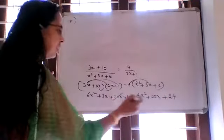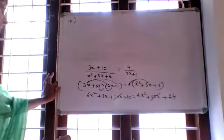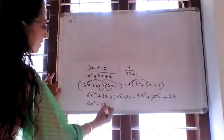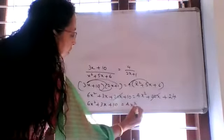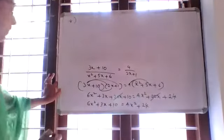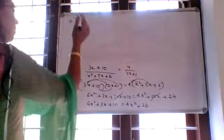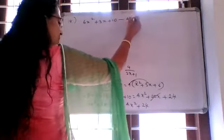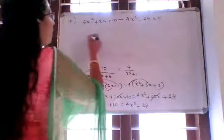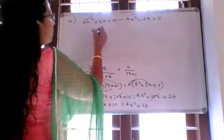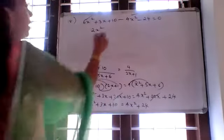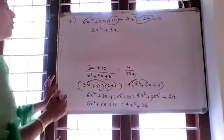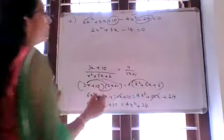The 20x terms on both sides cancel directly. Remaining: 6x squared plus 3x plus 10 equals 4x squared plus 24. Moving all terms to the left: 6x squared minus 4x squared is 2x squared, plus 3x, then 10 minus 24 is negative 14, equals 0. So 2x squared plus 3x minus 14 equals 0.